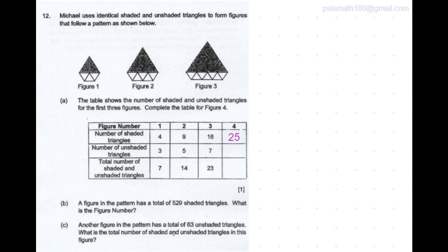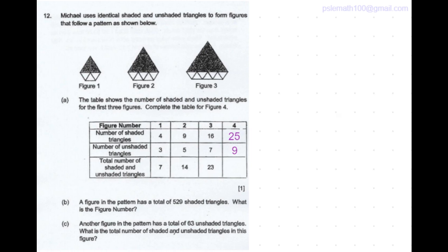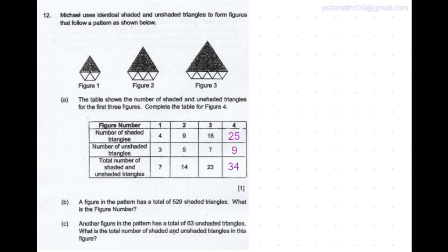The number of unshaded triangles is 3, 5, 7. So that's a difference of 2. So the next one should be 9. So the total number of shaded and unshaded triangles is just the sum of the 2 which is 25 plus 9 which is 34.